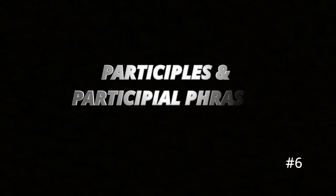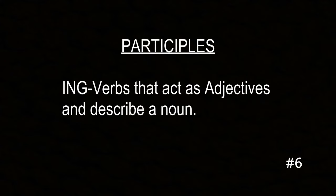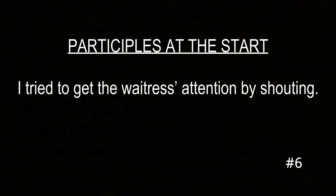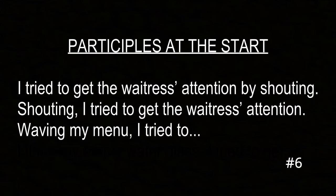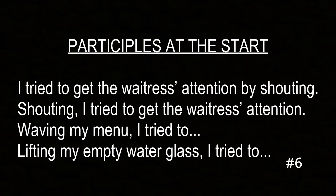Now let's move on to something more challenging: participles and participial phrases. Participles are -ing verbs that serve as adjectives, meaning they can describe a noun. Example: 'I tried to get the waitress's attention by shouting' becomes 'Shouting, I tried to get the waitress's attention.' You can also vary this further — 'Waving my menu, I tried to get the waitress's attention,' or 'Lifting my empty water glass, I tried to get the waitress's attention.' This not only spices up the sentence beginning but also adds an effective image the reader can grab onto.